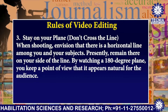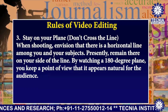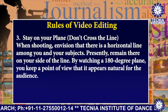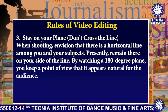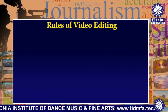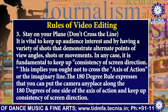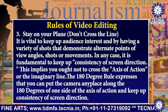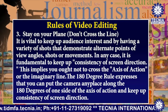Stay on your plan — don't cross the line. When shooting, envision that there is a horizontal line between you and your subjects. Remain on your side of the line. By observing the 180-degree plane, you keep a point of view that appears natural for the audience. It is vital to maintain audience interest by having a variety of shots that demonstrate alternate points of view, angles, shots, or movements. However, it is fundamental to keep up consistency of screen direction.